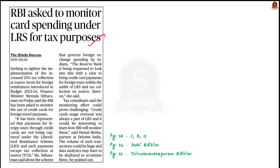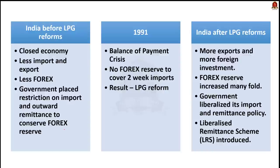To understand the next article, we first need to know some basics. Before getting into the details, we will cover the basics and then cover the news. Let us go back some 35 years to pre-liberalized India — that is, India before the LPG reforms of 1991. At that time, India was a closed economy. We did not export much, so we had very little forex reserves. Due to limited forex reserves, our country placed several restrictions on imports.